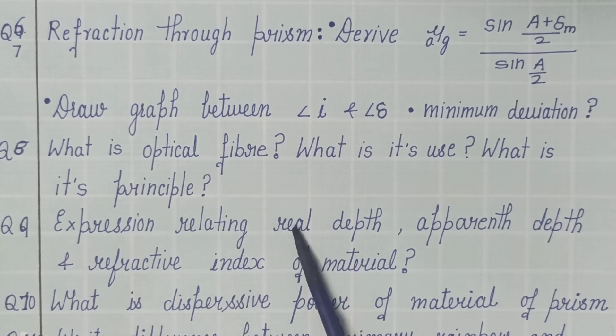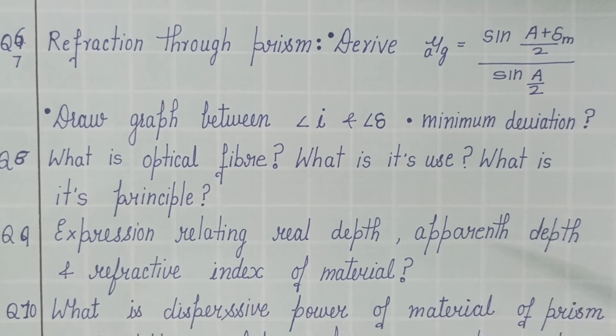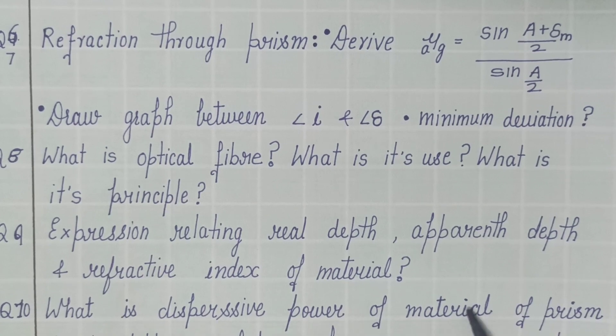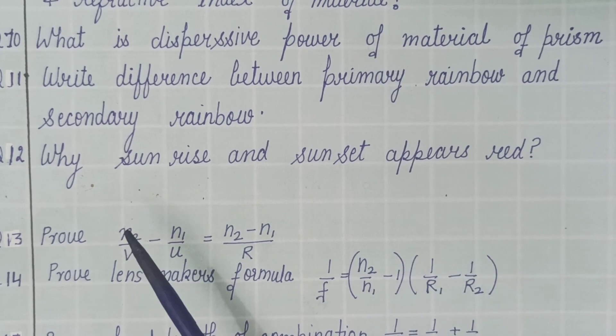Then relate real depth, apparent depth and refractive index of the material. This can be asked in one marks question. Next is what is dispersive power of material of prism? Especially formula, you must know. Formula they have asked several times.